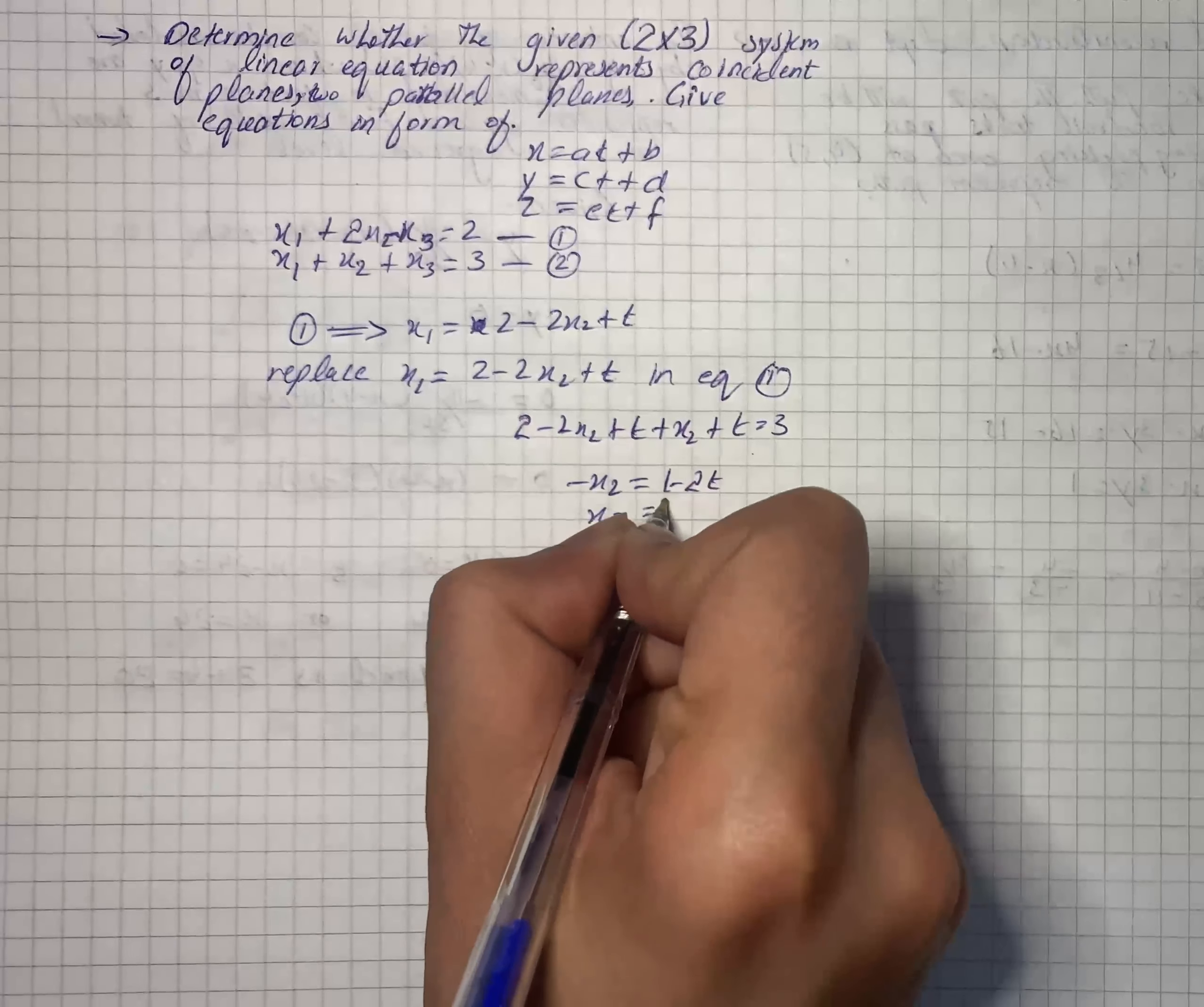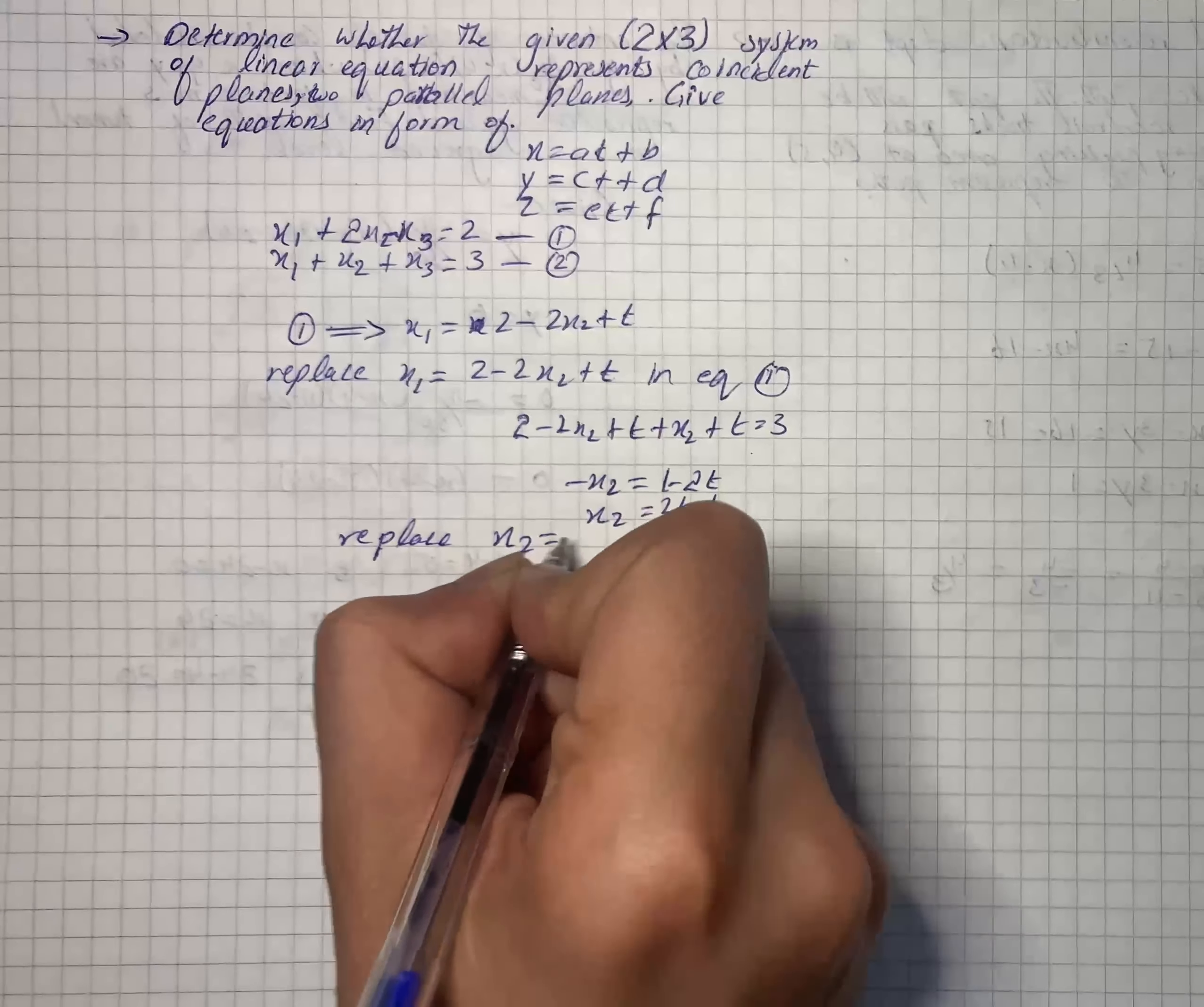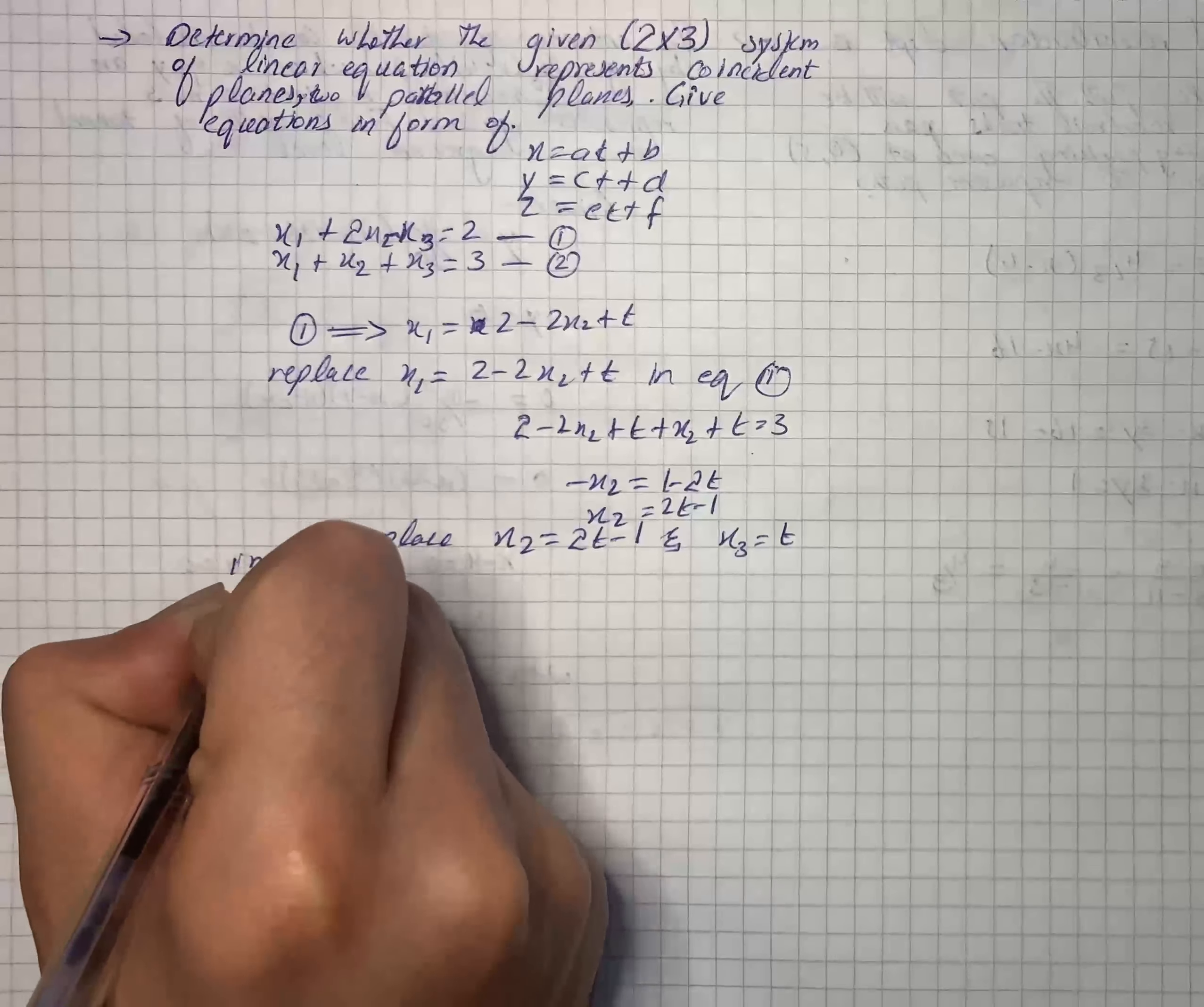x₂ = 2x₃ - 1. Now we will replace x₂ = 2t - 1 and x₃ = t, and where we are going to do this...